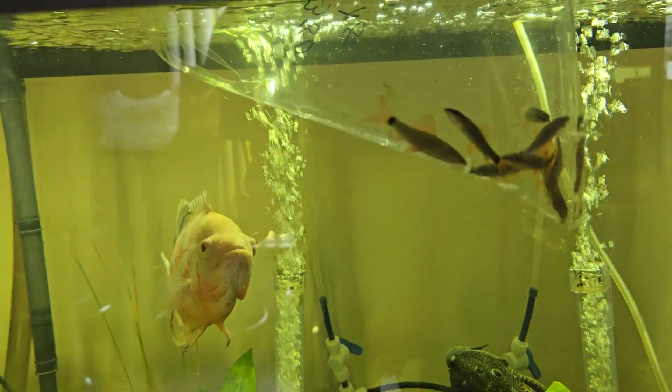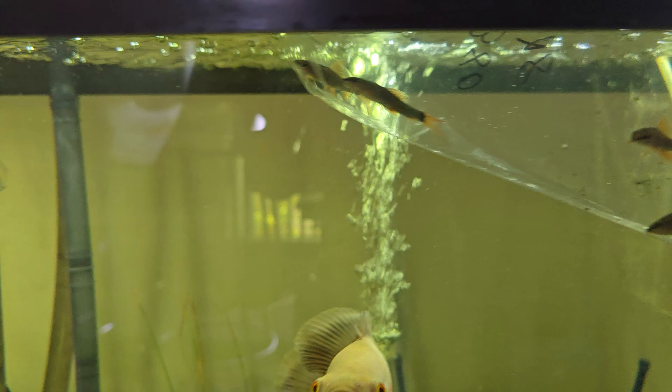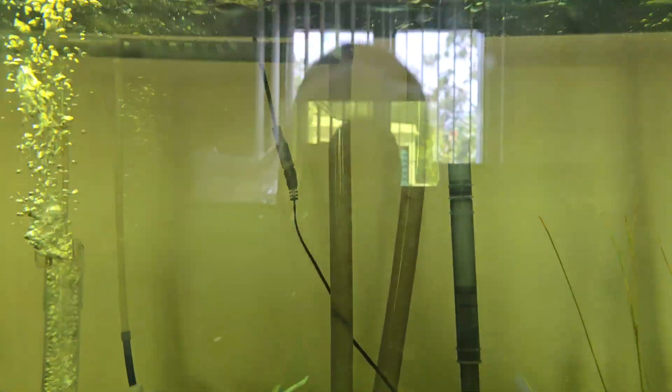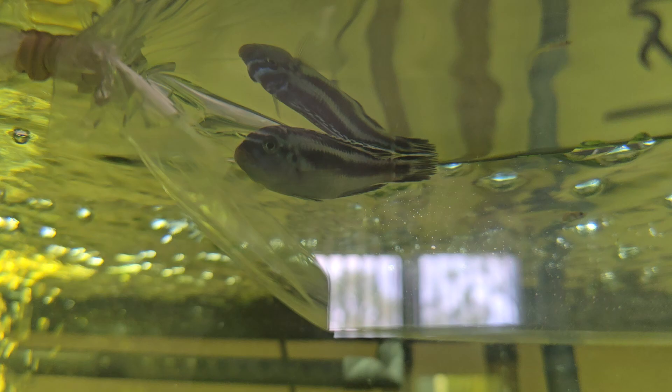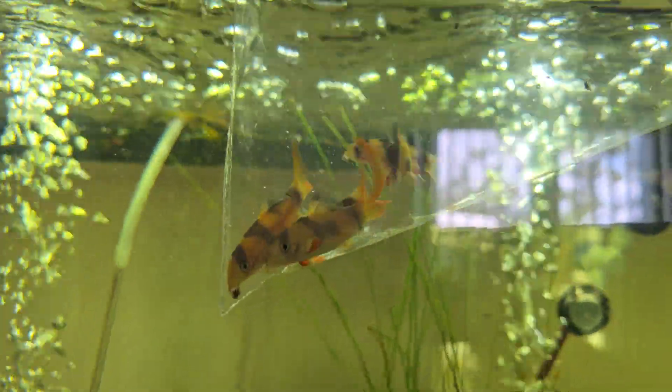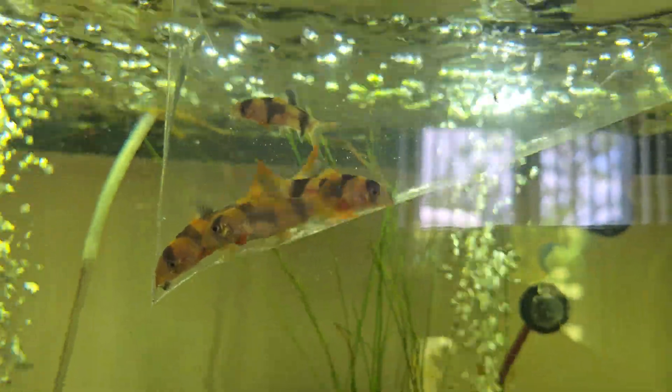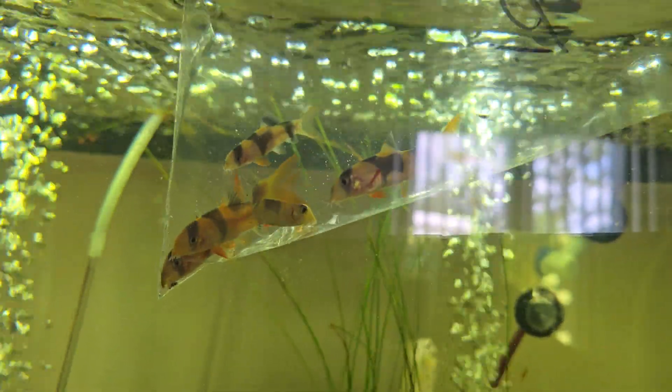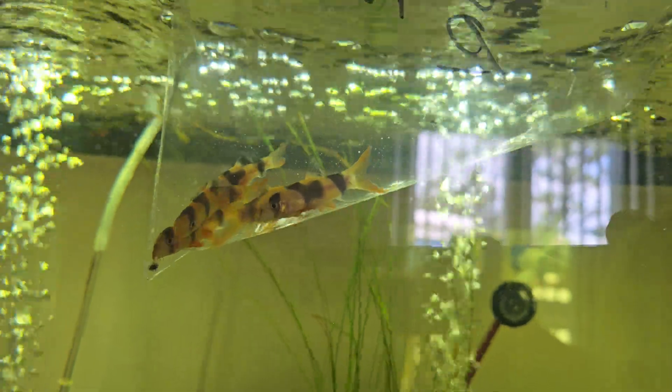There are eight baby rainbow sharks and in the middle is a really pretty African cichlid. Looks like a dark blue and stripy blue. And over here, all piled in the corner, are five little clown loaches they're called. They're cute.